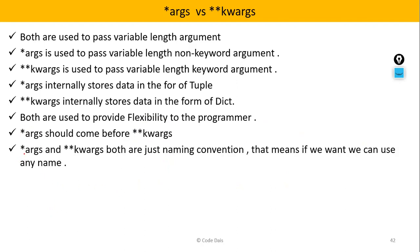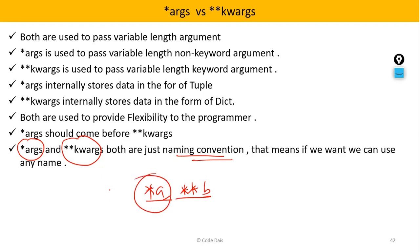Next, *args and **kwargs are just a naming convention. Based on your requirement, you can use other names also — you can use *a, you can use **b, like this also you can use. These are naming conventions. KW ARGS means keyword argument and ARGS means argument. So you can use any name.